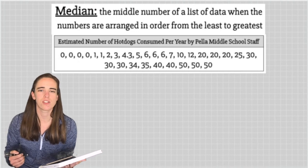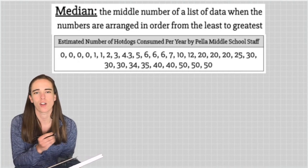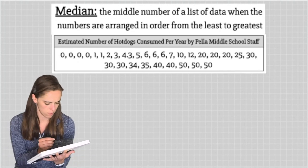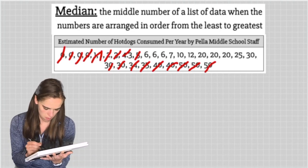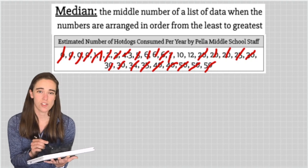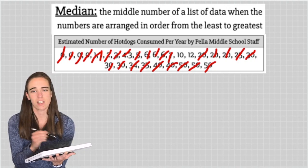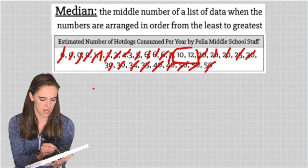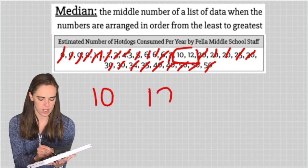Once we've ordered the data from least to greatest, you can simply start by crossing off the smallest amount and then the largest amount all the way until you get to the middle. As you can see here, if I were to cross off the next lowest and the next highest, I would have nothing left. So right now I have the numbers 10 and 12 right in the middle.